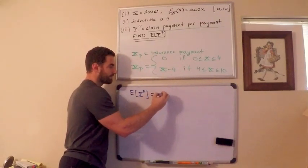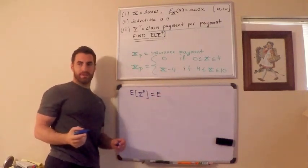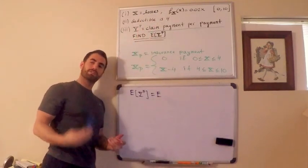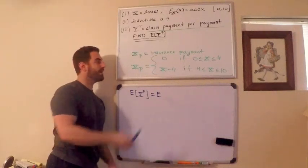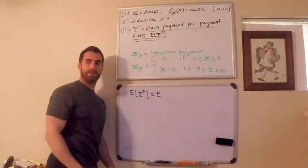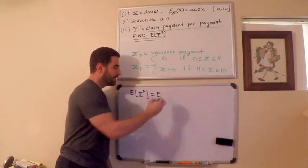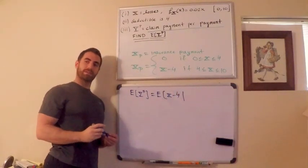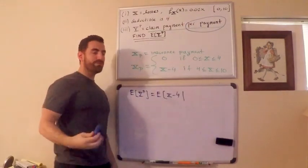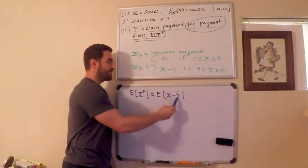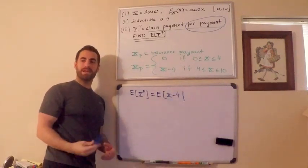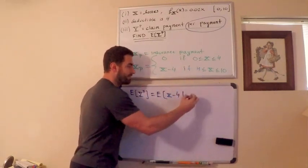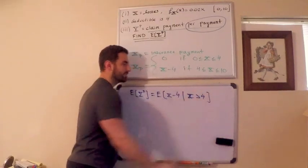You want to think of this as, what is the claim payment given that I make a payment? This is where you have to be very careful with the wording. I need to write this in terms of the loss random variable. If I'm the insurance company, I'm going to pay X minus 4 given that I make a payment. This is where the per payment comes into play. I make a payment when the loss exceeds the deductible. That's what this notation means.